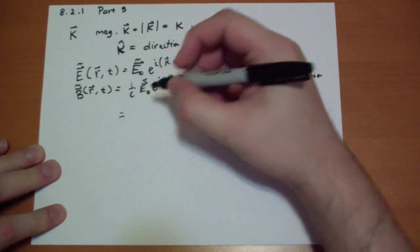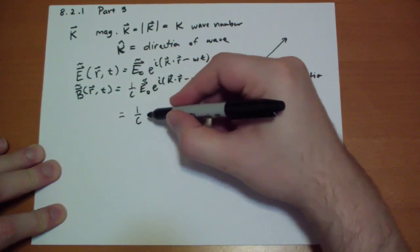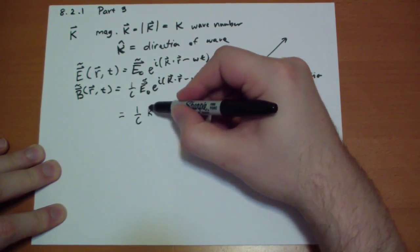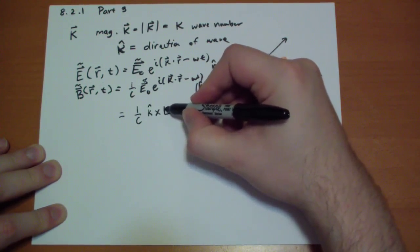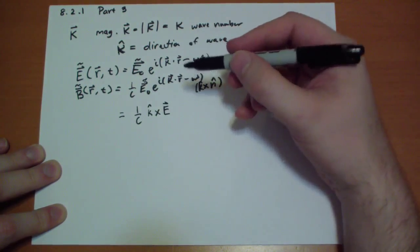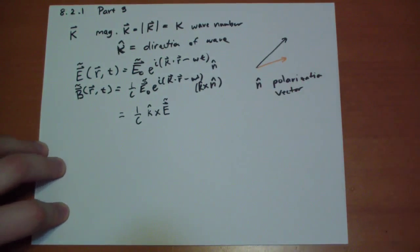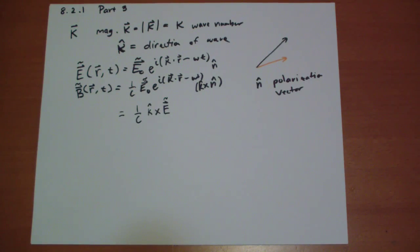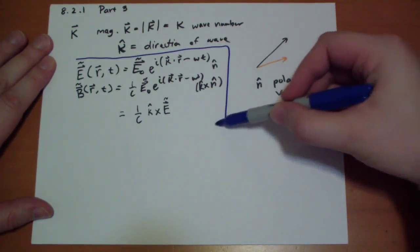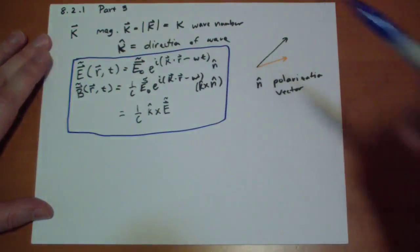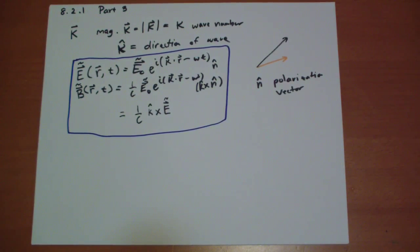Another way to write this out, a little bit simpler notation, is 1 over C, kappa-hat, the direction of the wave motion, cross the E vector complex. So these two equations describe everything you need to know about the E vector and the B vector, given any direction of motion, any wave number, any polarization, and as long as you're in a vacuum, everything works out.